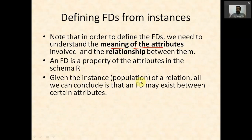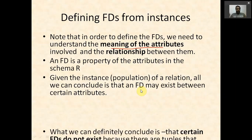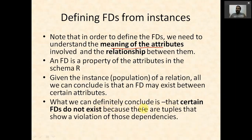Given an instance or population of a table, we can only conclude that a functional dependency may exist — we cannot definitively confirm it. However, what we can definitely conclude is that certain functional dependencies do NOT exist. If a functional dependency is given to us, we can verify it by checking the rows of the table. But we cannot discover functional dependencies from table instances alone.